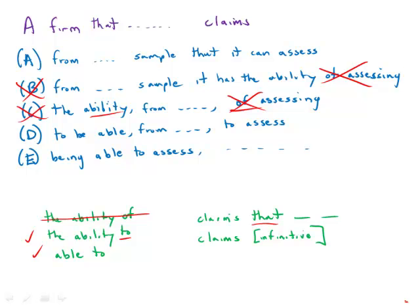Or it can be followed by an infinitive. I claim to own eight alligators, something like that. So claim that, that's correct. Claim to be able, that's correct.